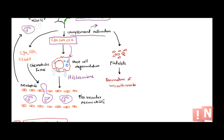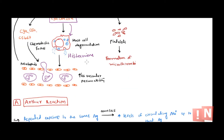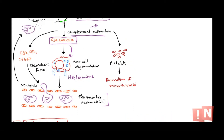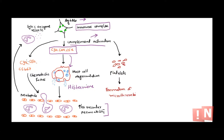One of the important things released during mast cell degranulation is histamine. Histamine causes increased vascular permeability — the diameter of nearby blood vessels increases and there are gaps between endothelial cells. As a result, inflammation begins at that site: we see edema, erythema, swelling, and redness.